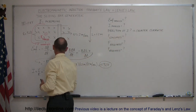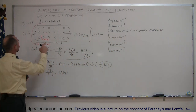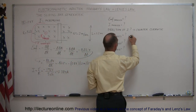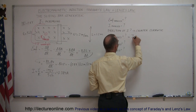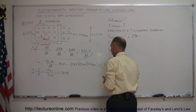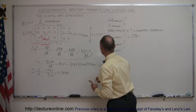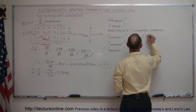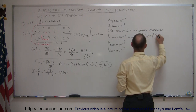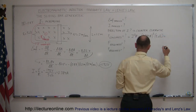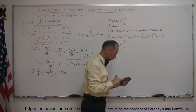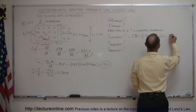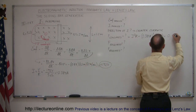Next we find the power consumed by the resistor. By definition, power equals I squared times R. The current is 0.384 amps, squared and multiplied by the resistance of 5 ohms, which gives us 0.737 watts.